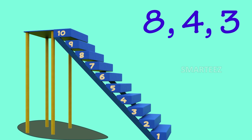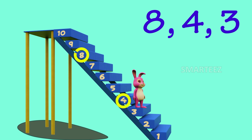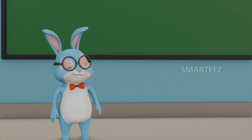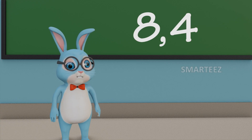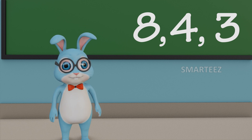Are these numbers in descending order? Let's see the jumps. Well, it looks like both jumps went downwards — first from 8 to 4 and then from 4 to 3. So the numbers 8, 4 and 3 are in descending order.